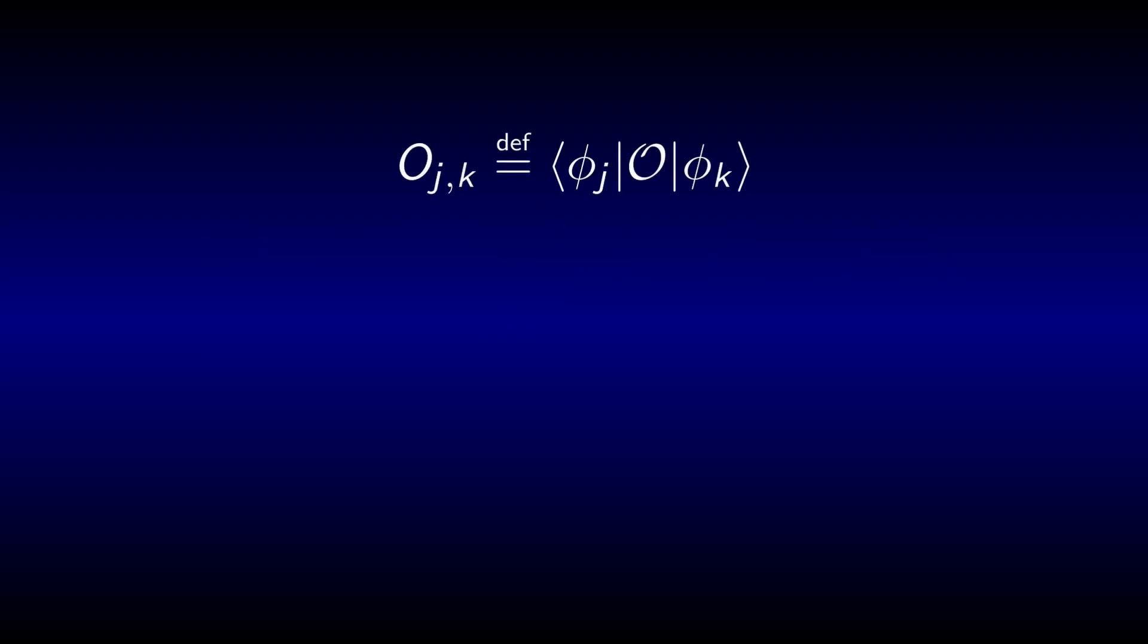All numbers together then make up a matrix. We call it the matrix representation of O in the basis of phi.